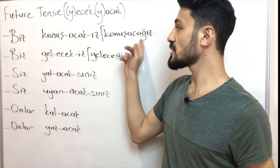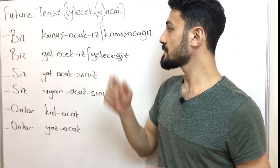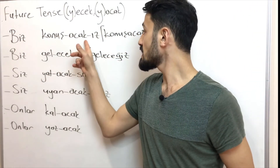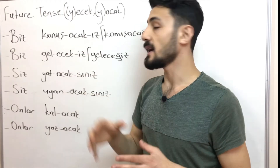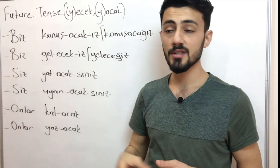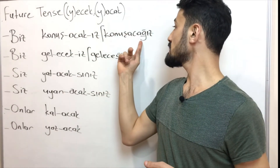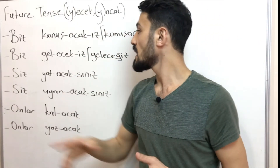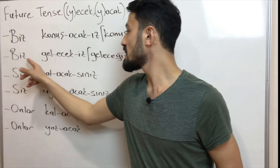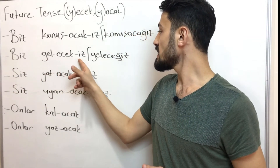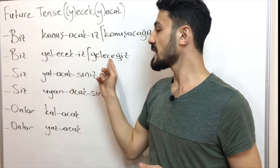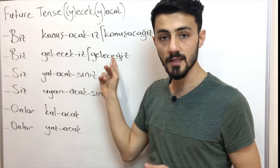...ız → konuşacağız. The k sound stays between two vowels and changes to a soft g. Biz gel-ecek-iz → geleceğiz — we will come.